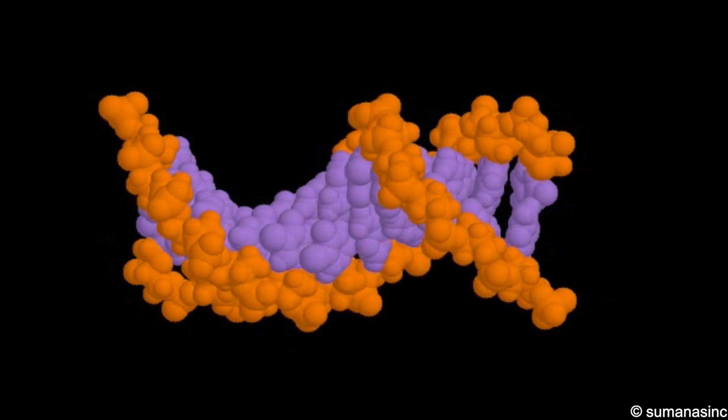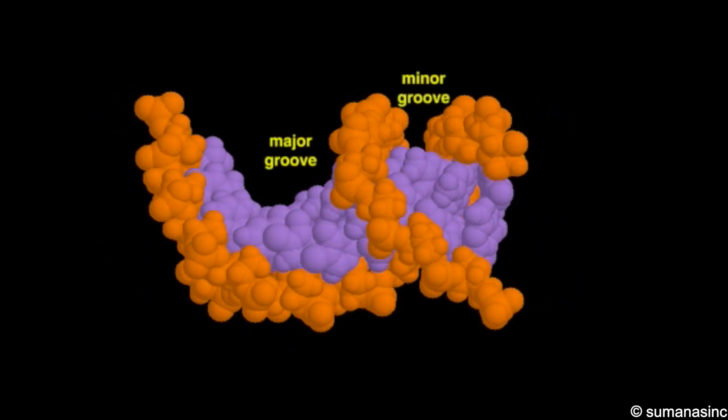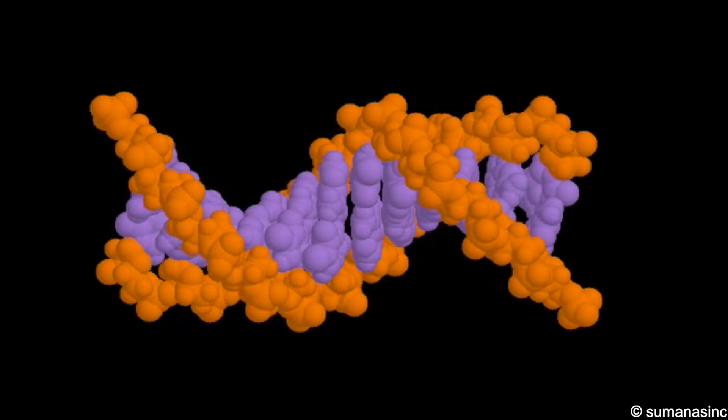The two grooves between the backbones are called the major and minor groove, based on their sizes. Most protein DNA contacts are made in the major groove, because the minor groove is too narrow.